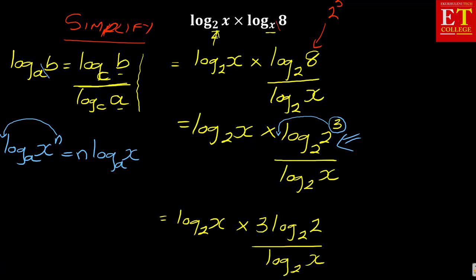Again, if I can apply another law. Remember, log base A of A. If the base and the number are equal or are the same, you put a 1. So in this case, log base 2 of 2 is a 1. So in actual fact, now you are having log base 2 of X times 3 times 1 over log base 2 of X. Log base 2 of X is the same as over 1. So you can now see that you can cancel log base 2 of X with log base 2 of X. So what you are left with is 1 times 3.